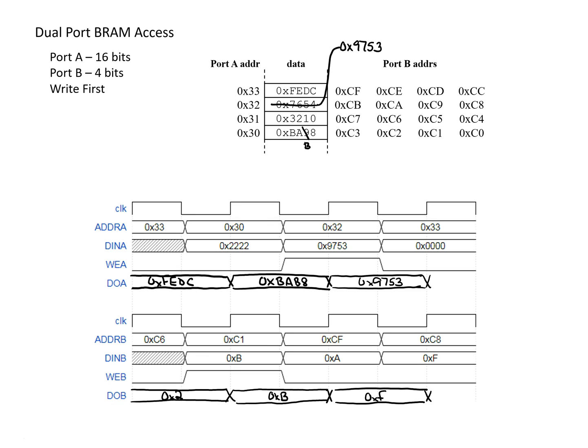Now going to the last cycle: there are no write enables, so we just need to read the contents. For port A, we look at address 33 — it has the same value it had at the start, 0xFEDC. For port B, we're looking at address C8, which now has the value of 3 since it was written in a previous cycle. So we use the current updated value of 0x3. This concludes the write-first mode example.